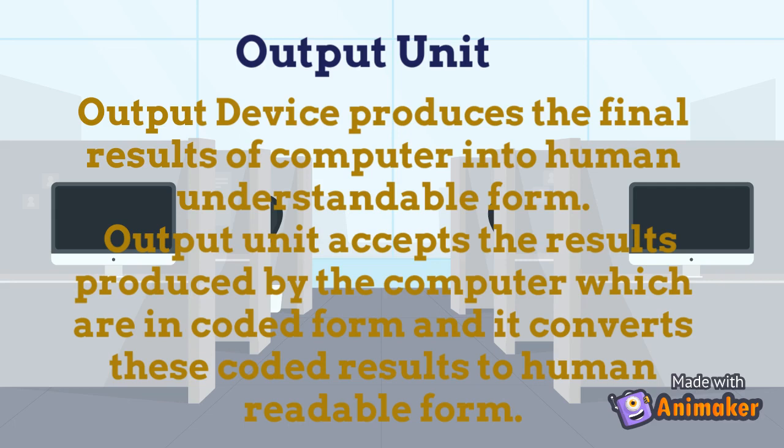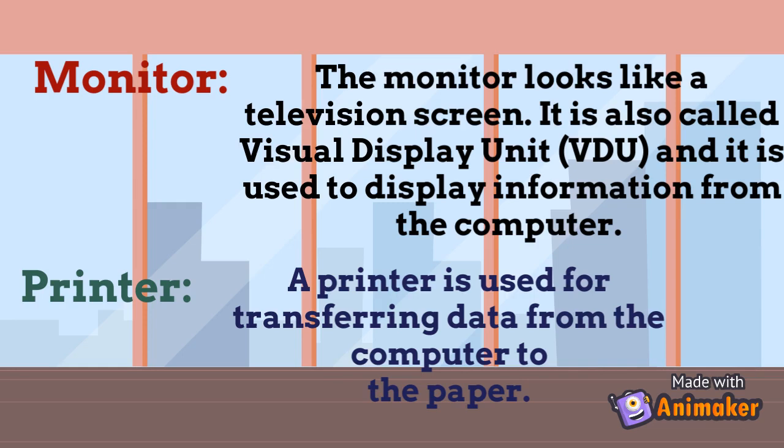Now we will understand what is an output unit. The output unit or output device produces the final result of the computer in a human-readable form. The computer converts our language to a computer-understandable language. The output unit accepts the result produced by the computer in encoded form and converts this coded result into human-readable form so that we can understand it. So first it converts to computer understandable language, and after that it translates that to human understandable language.